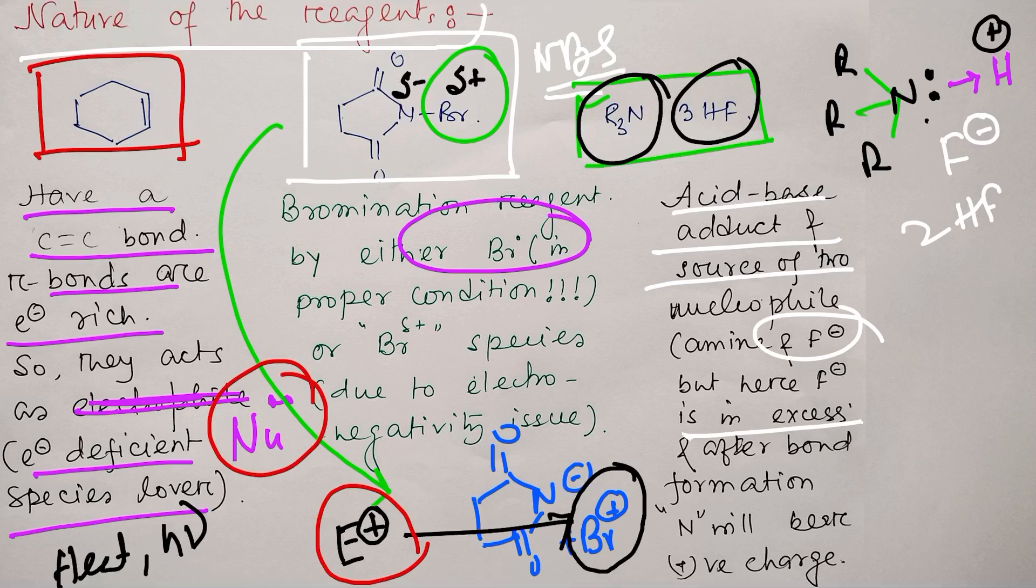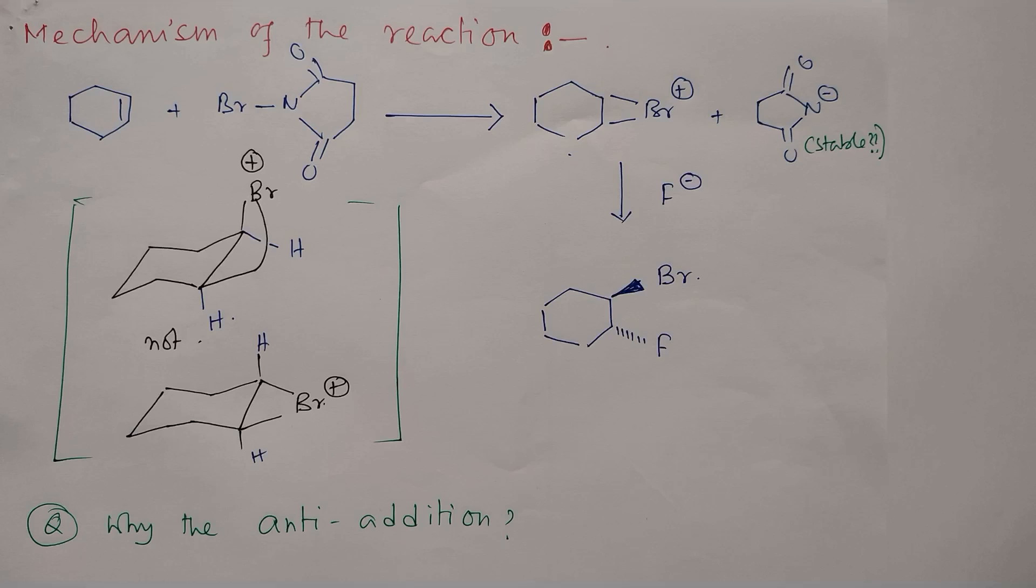This acid-base adduct results in a source of nucleophile, that is fluoride, and it is here in excess. After bond formation, nitrogen will be positively charged because after bonding with proton, the formal positive charge will come on the nitrogen. It became a quaternary type species. So we have understood the nature of the reagent. Now let us discuss how they react.